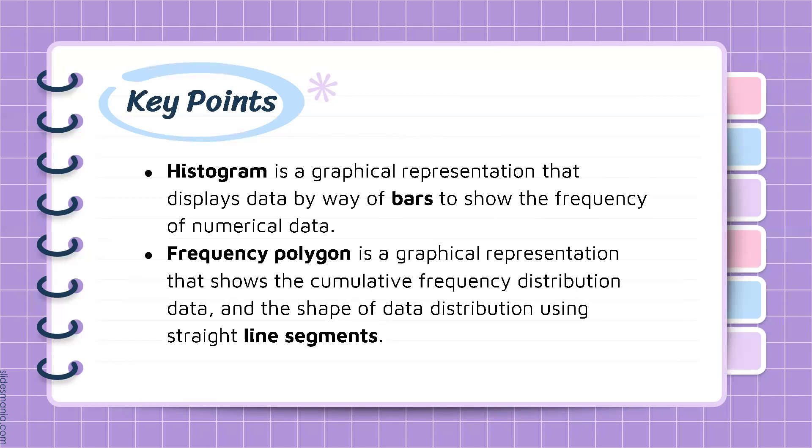Here are the key points that we have to remember. Histogram is a graphical representation that displays data by way of bars to show the frequency of numerical data. Frequency polygon, on the other hand, is a graphical representation that shows the cumulative frequency distribution data and the shape of data distribution using the straight line segments.